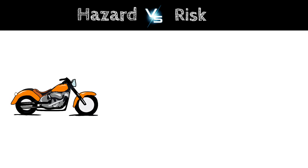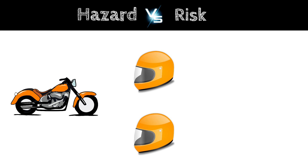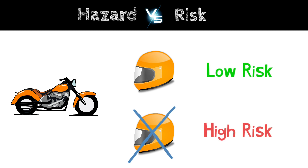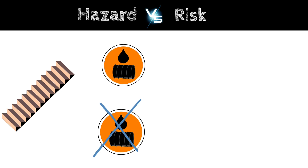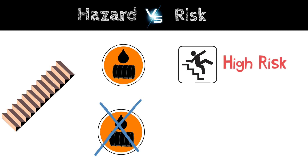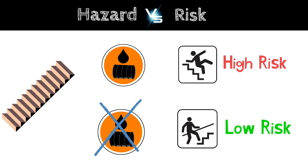Risk means what is the chance that a hazard will cause harm to us. Consider riding a bike on the road as a hazard — the risk is more when you ride without a helmet, and the risk is very less when you ride with a helmet. Consider a staircase as a hazard. If oil is spilled on the staircase, the risk is more. But if the staircase has no oil spill, the harm is very less — that is, the risk is very less.